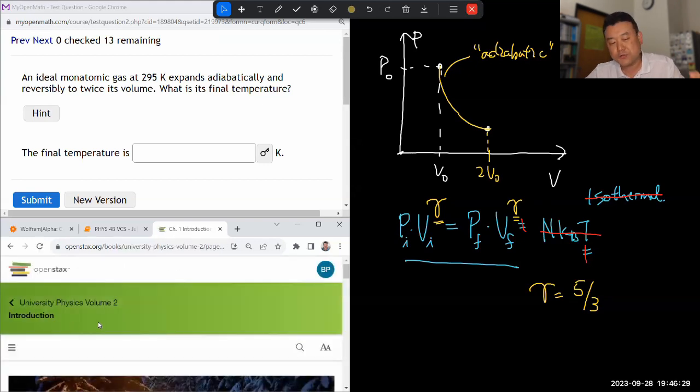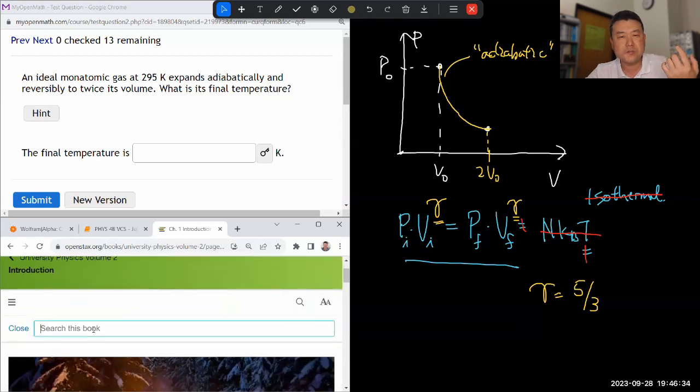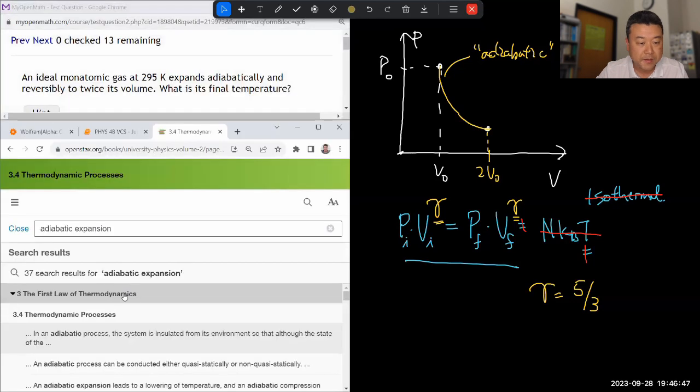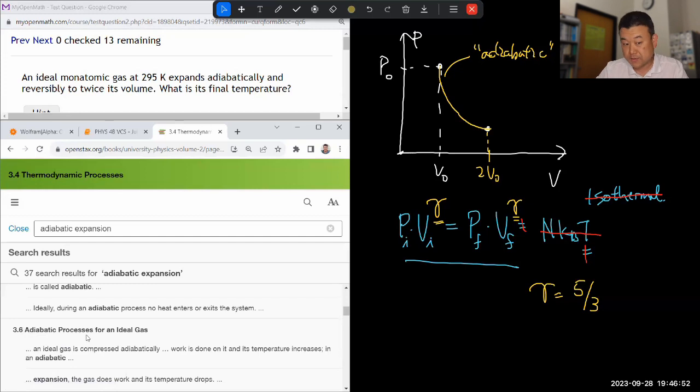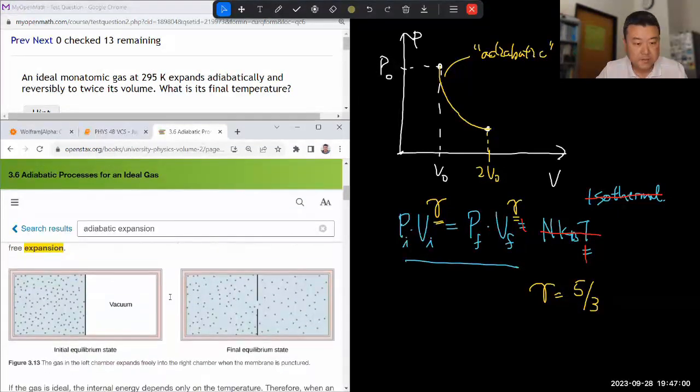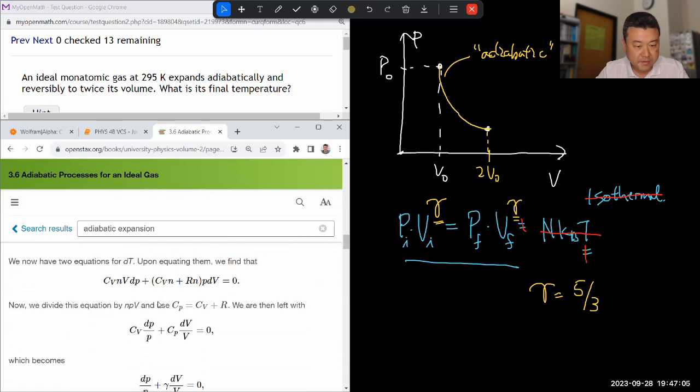So I think for a monatomic gas, I think it should be five thirds, but I'm not 100% sure. So let me just double check. The way I'm going to double check is I'm going to look up our textbook and make sure I didn't misremember it. So let me look up adiabatic expansion. It's going to be mentioned somewhere around in the same set of topics. Adiabatic processes for an ideal gas.